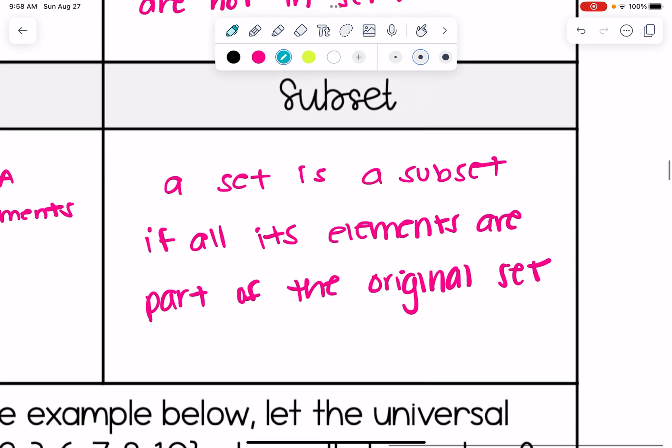And finally a subset is a set that all of its elements are part of the original set. So for instance the set one, two, three is a subset of the set one, two, three, four, five. It has all the elements.